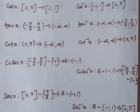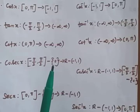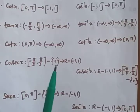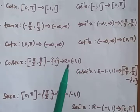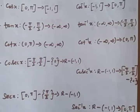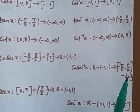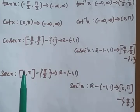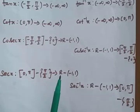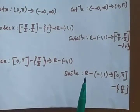For cosecant x, the range is [−π/2, +π/2] excluding 0, and the domain is the real numbers excluding [−1, 1]. So cosecant⁻¹(x) has domain ℝ \ [−1, 1] and range [−π/2, +π/2] \ {0}. For secant x, the range is [0, π] excluding π/2, and the domain is ℝ \ [−1, 1]. So secant⁻¹(x) has domain ℝ \ [−1, 1] and range [0, π] \ {π/2}.